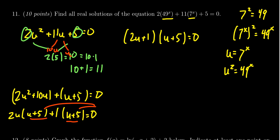We're then going to set both of these factors equal to 0. So we get 2u + 1 = 0. We also get u + 5 = 0. In the first case, 2u + 1 = 0, minus 1 divided by 2, we see u = -1/2. In the second case, u + 5 = 0, subtract 5 from both sides, we get -5.